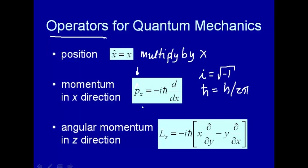We're doing this because when we make this assumption, we're able to explain experimental data that we cannot explain using classical mechanics. So essentially the end justifies the means. And again, it's like postulates — this is what you have to accept. These are the tenets of faith in the church of quantum mechanics, so we've got to go along with them.